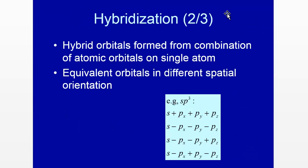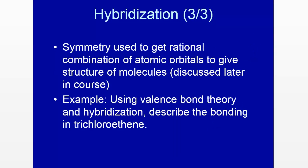Hybrid orbitals are formed by combination of atomic orbitals on a single atom, giving equivalent orbitals in different spatial orientations. For sp3, we can add the s and p orbitals, or add the s and subtract the p's, or use various combinations — each giving an equivalent orbital spatially pointed to a corner of a tetrahedron. You can't arbitrarily add orbitals; symmetry must be maintained. Symmetry is used to get the rational combination of atomic orbitals to form hybrid orbitals, which then overlap in valence bond theory.